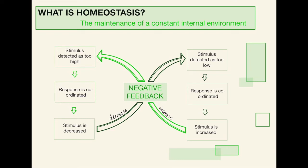Now, let's say that too much of that hormone has been released and the stimulus is decreased too much. So then we go to the top right — the stimulus is detected as being too low. A response is coordinated, and another hormone is released to increase that blood glucose level again. And this is a loop, because that exact thing could just repeat again, and we could go back to the top left.